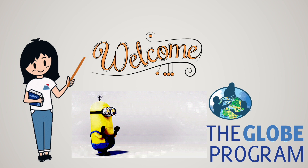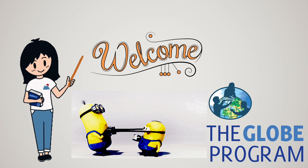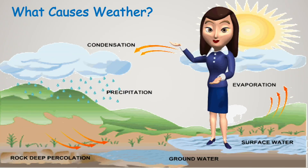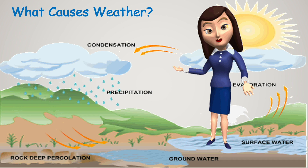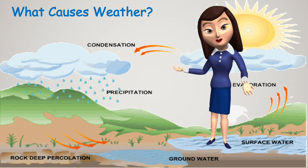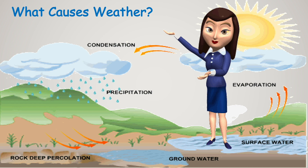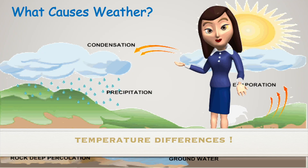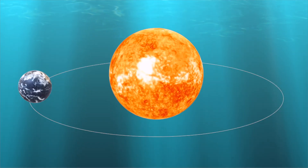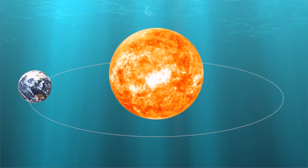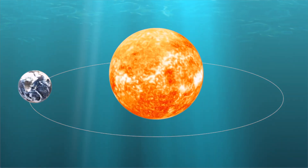Have you ever wondered what causes the weather? The weather is pretty complex and is caused by a number of interdependent and interrelated factors. Its cause can be summarized in one word: temperature differences. The Sun is the source of energy of Earth, but it does not heat the Earth evenly. The top and bottom parts of the Earth get less heat.